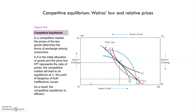We choose prices for the two goods so that the quantity of food demanded by each Karen in this market is equal to the quantity of food that each James wishes to sell. As a result, the market for food and clothing are in equilibrium. An equilibrium is a set of prices at which the quantity demanded equals the quantity supplied in every market. Here we find an equilibrium for both Karen and James because their indifference curves are tangent to each other and also tangent to the price line.